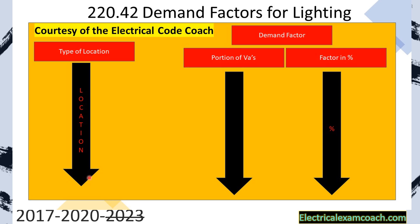So if it's not listed inside of this type of occupancy, we're going to cross over. And if you look over here down in the bottom right hand, it's at 100% calculation, meaning that there is no demand factor for lighting unless you're one of these specific places that are listed on the left. Then over here across the top, we find our demand factor.